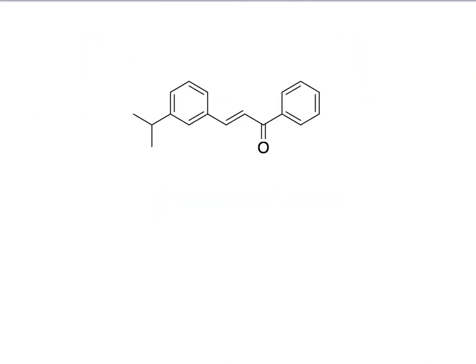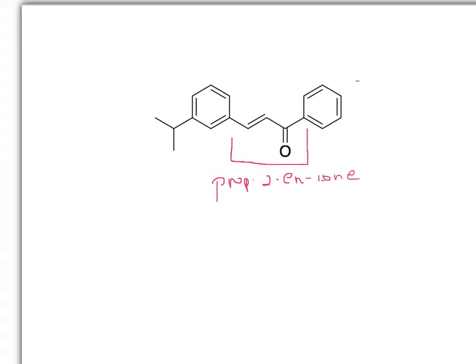So here's another example. Again, you still maintain the same parent name, prop-2-ene-1-one. And so this side here will just be phenyl because it has no substituents on it. And then this side, again, this one would just be three-isopropyl.